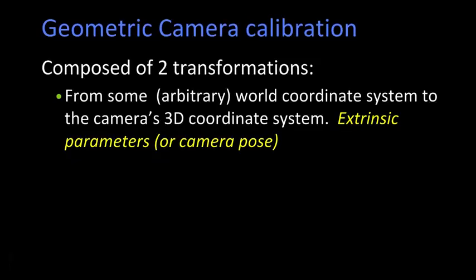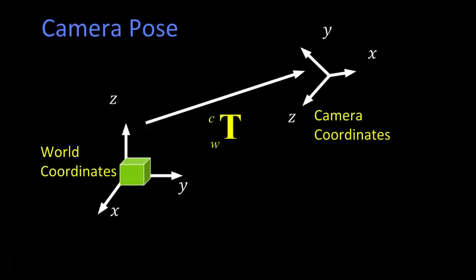Welcome back, Introduction to Computer Vision. Today we're going to be talking about intrinsic camera calibration. Last time we said that we're going to do geometric calibration in general, and that there were two parts to calibration. The first transformation is from some arbitrary world coordinate system to the camera system, or the camera pose. And this was the extrinsic parameters.